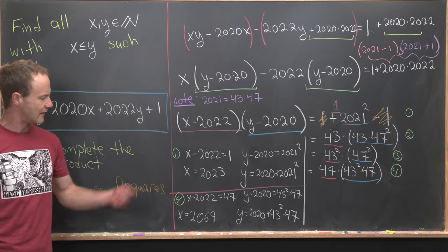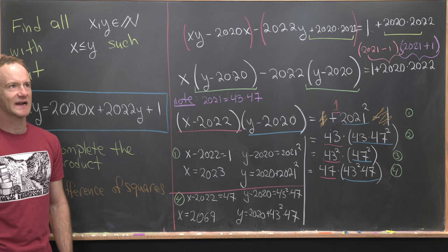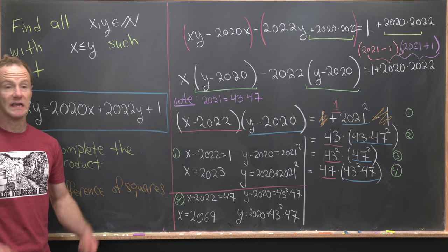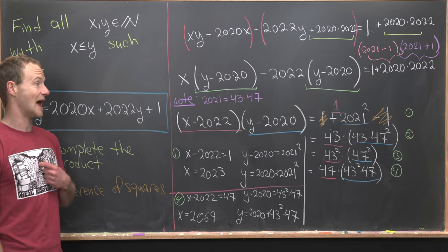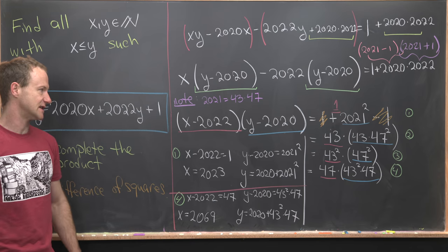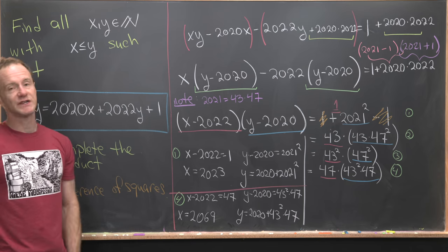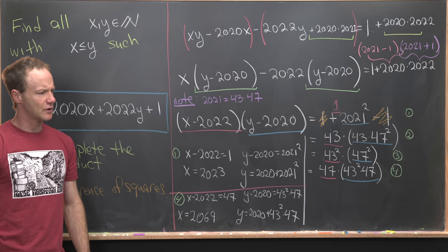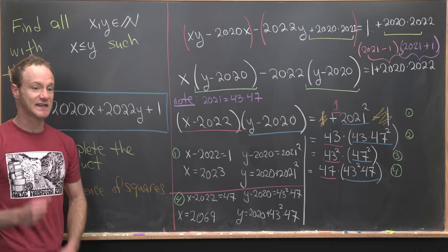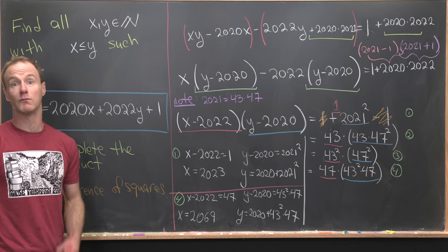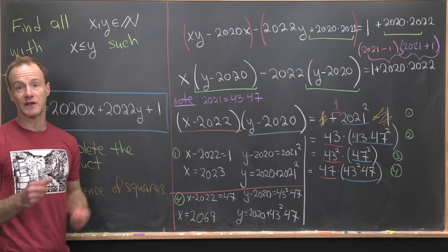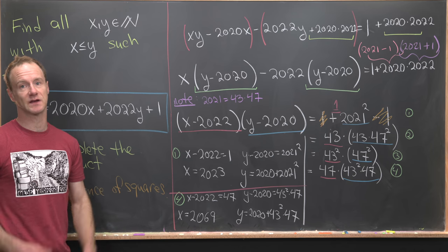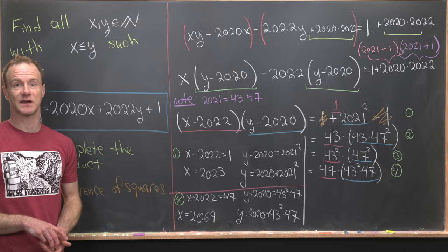Now I've glossed over one important fact here, which maybe the keen viewers will notice, and that is I have somewhere implicitly used the fact that 2021 is co-prime with 2022 and 2020. So if you guys can see a similar problem where we would have to look at more cases, if something like that didn't hold, maybe post it in the comments. And that's a good place to stop.